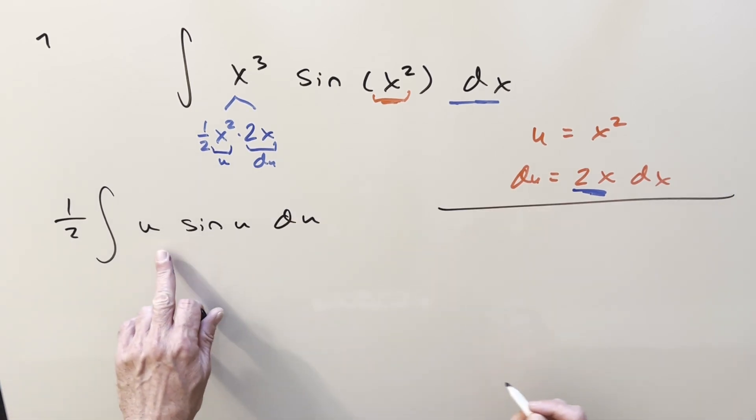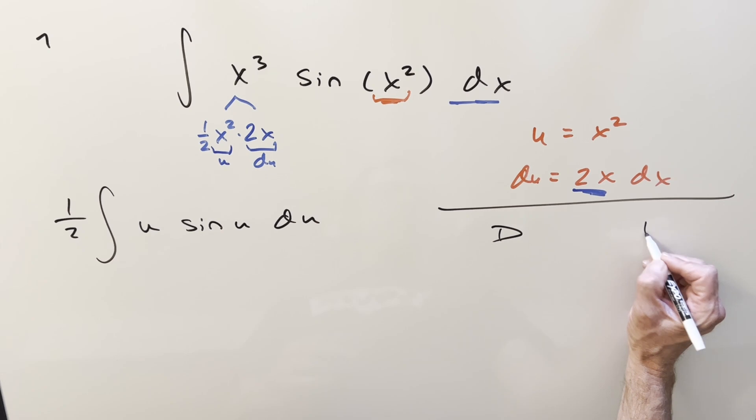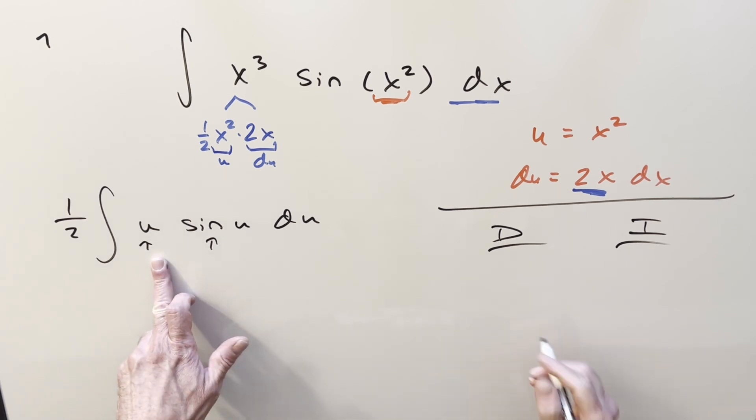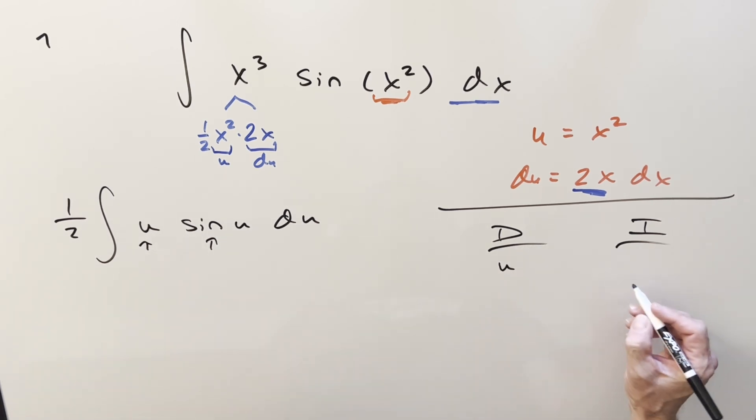So now we can do integration by parts using the DI method over here to the right. I want to differentiate this and integrate this. The reason is because this is going to differentiate all the way down to 0. So we'll set it up, differentiate over here, that's just going to be 1. Do it one more time, and we get a 0.